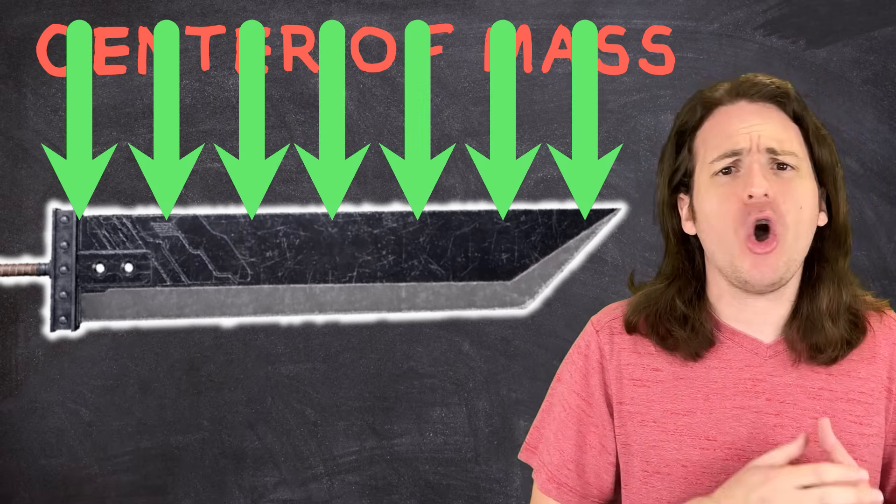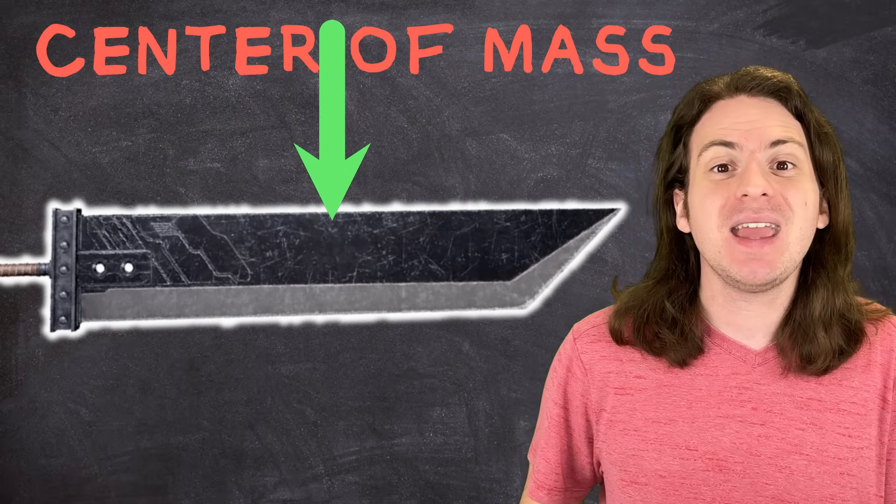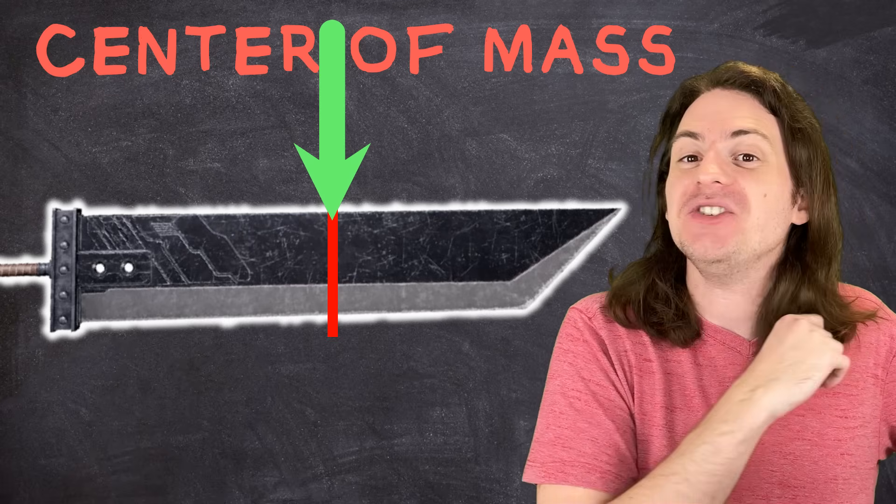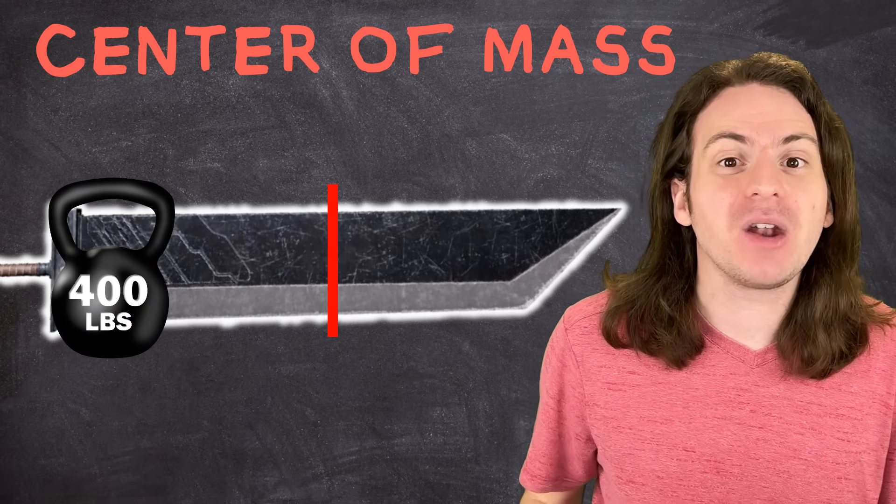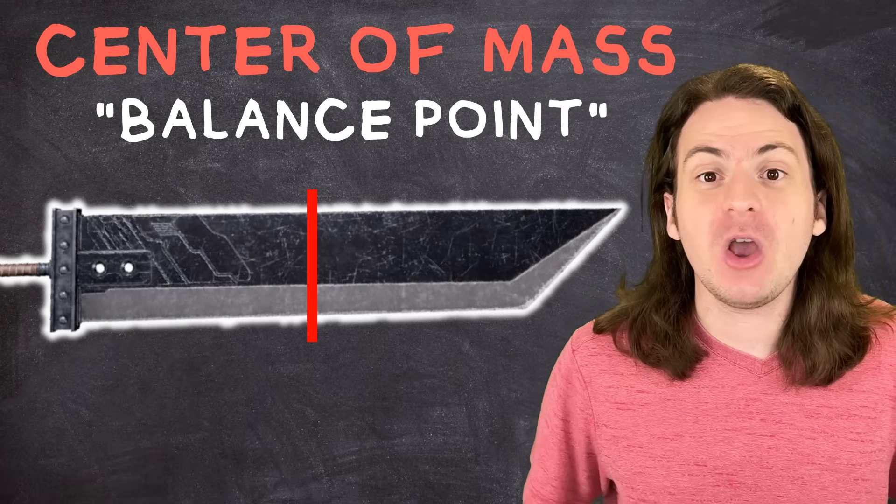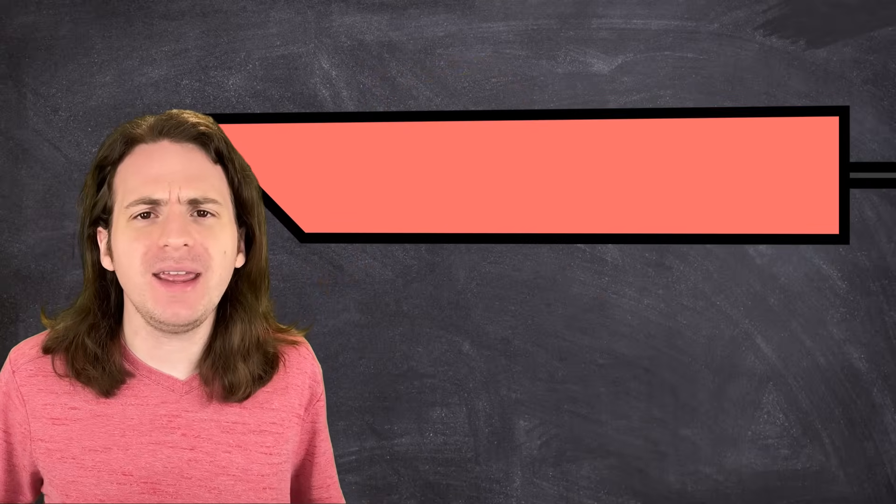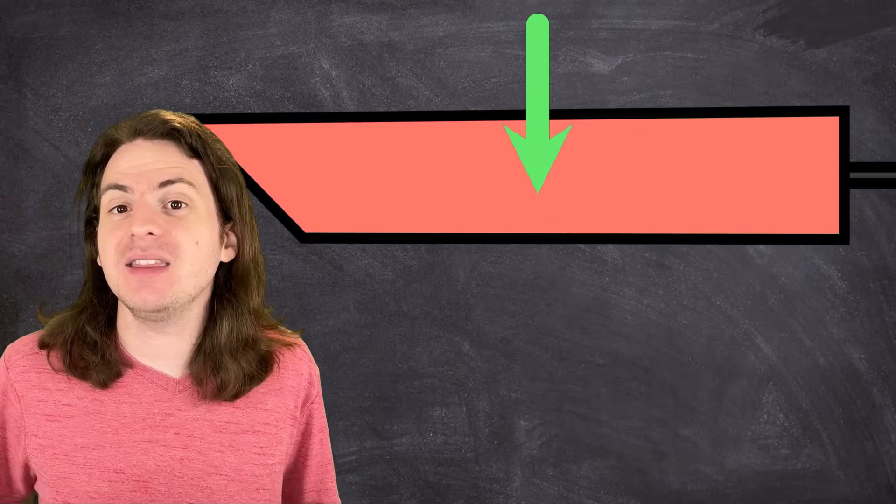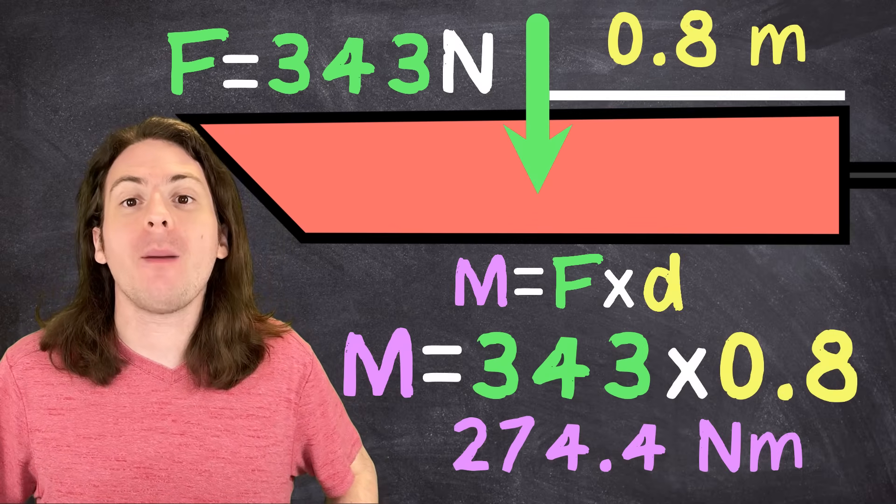Now obviously, in reality, gravity acts all over an object. But if we find the average effects of all that gravity, we can reduce it to a single force acting at a single point, and that point is called the center of mass. Think of it as the average concentration of matter in an object. So if one end is heavier, the center of mass will be closer to that side. It's also sometimes referred to as the balance point of an object, because the forces of gravity on either side are equal. So as long as that point is supported, the object won't tip over. And from this, we find an interesting sort of loophole in sword design. If the mass of the blade is evenly distributed, then the center of mass is going to be about halfway down the length of the blade. So with the buster sword, that would be a length of about 0.8 meters, giving us a moment of 274.4 newton meters.